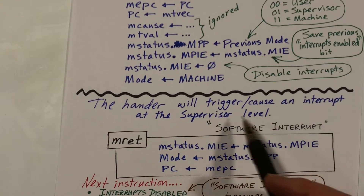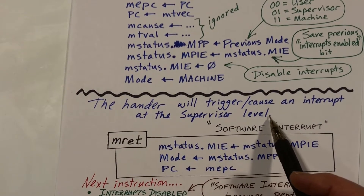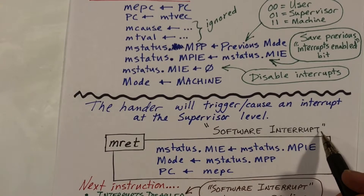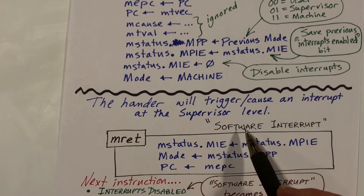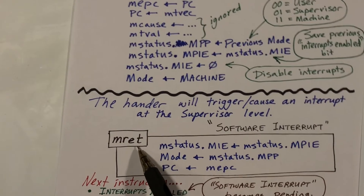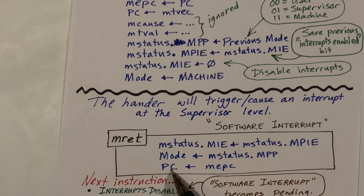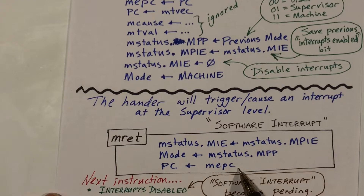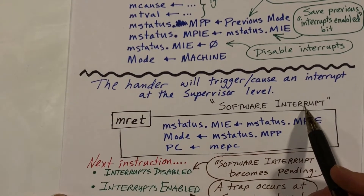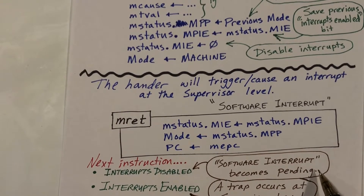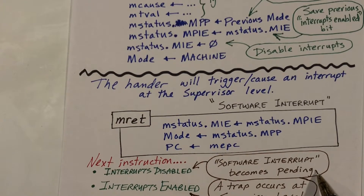The timervec code synthesizes or causes an interrupt at the supervisor level — a so-called software interrupt, not a timer interrupt. This code, which is fairly short, executes an instruction called mreturn — return from machine mode — which restores the interrupts enabled bit, restores the mode to whatever it was previously, and restores the program counter, returning to the interrupted code. After that, we've raised this software interrupt. If interrupts are disabled at supervisor mode, the software interrupt becomes pending until the kernel enables interrupts.